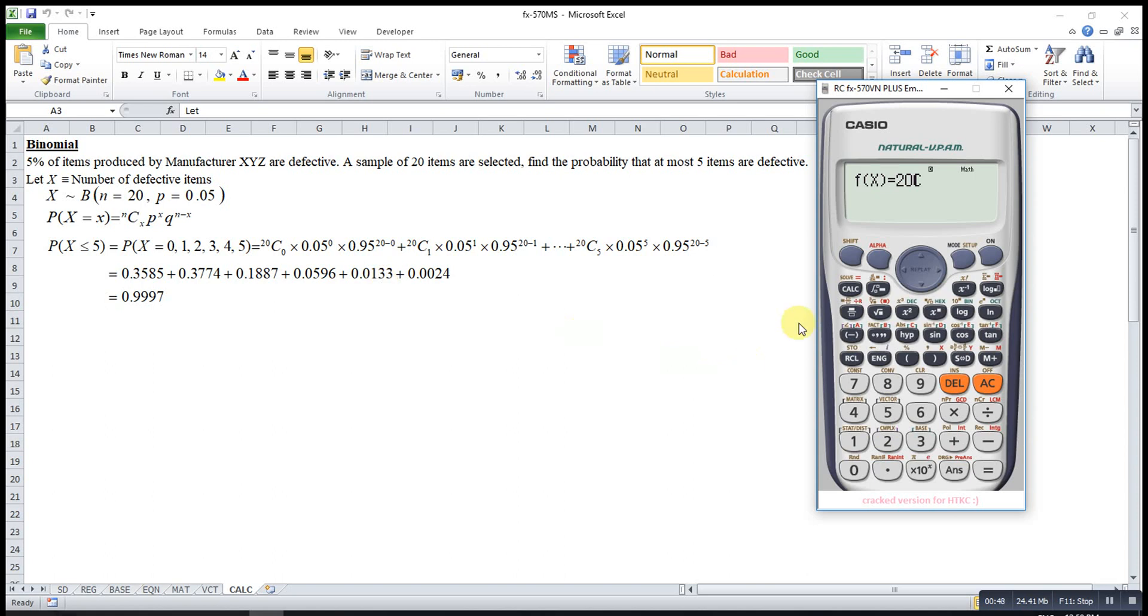This one is X, so we press alphabet X, then times 0.05 to the power of X, then times 0.95 to the power of N minus X. So 20 minus alphabet X, then press equal.